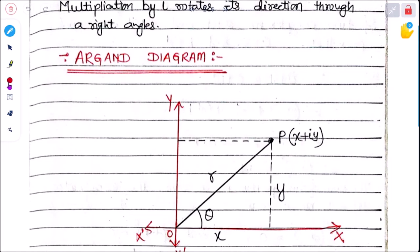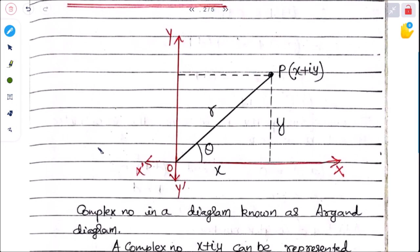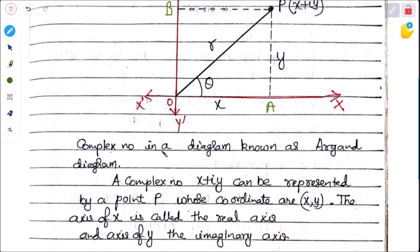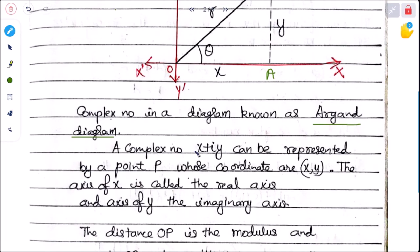Next is the Argand plane. Consider x-axis and y-axis with a point P represented by x + iy. The origin to A gives the x-value and origin to B gives the y-value. The distance of P from the origin is r, making an angle θ. Representing a complex number in a diagram is known as the Argand diagram.